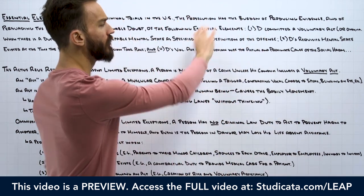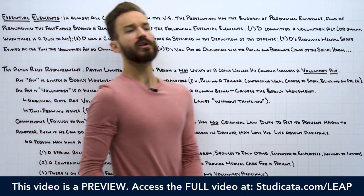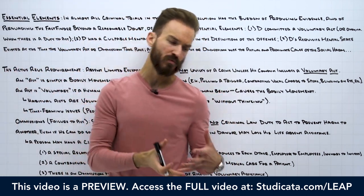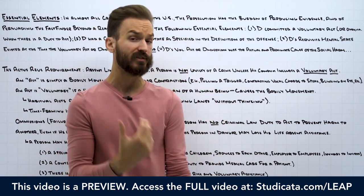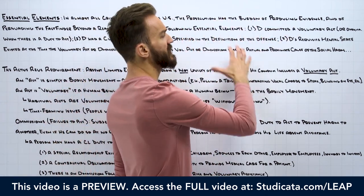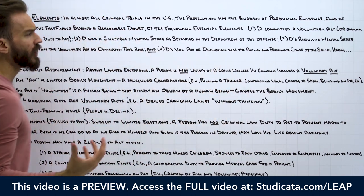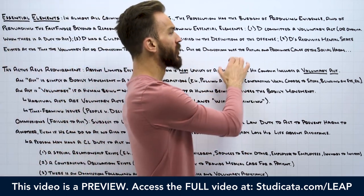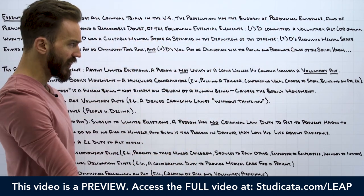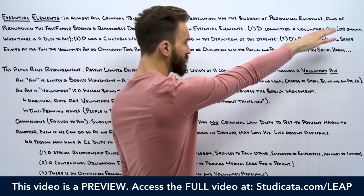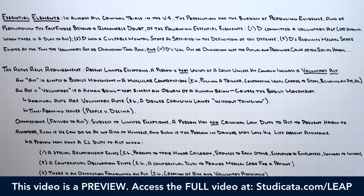In that case, all four essential elements would probably be very easy to show. Generally, we're not going to have fact patterns in criminal law that are that straightforward, but sometimes in real life that's how it plays out and there would really not be any real issues with these elements. We're going to break each of these essential elements down in different lessons. So in this lesson, we'll focus on our first element, which is the actus reus requirement.